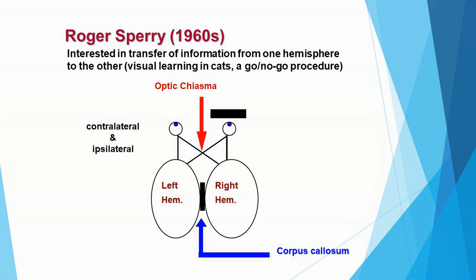Once the animal is 100% correct on this go-no-go procedure, Sperry took the patch off the right eye and placed it on the left eye. Now the right eye has never seen the light or anything about this procedure. Is the animal going to still be able to do it at 100% accuracy? The answer is yes, because the left hemisphere can communicate to the right hemisphere, and so the animal is still 100% correct performing this task with the different eye.